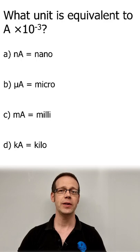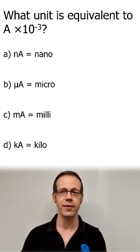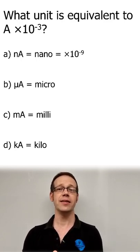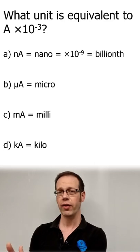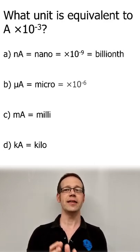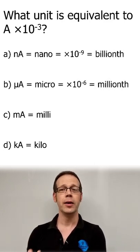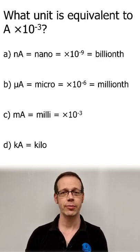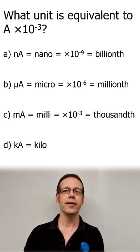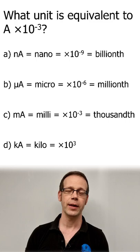We can simply swap out the letter for a power of 10. So nano becomes times 10 to the minus 9 or billionth, micro becomes times 10 to the minus 6 or millionth, milli becomes times 10 to the minus 3 or thousandth, and kilo is times 10 to the power of 3 or thousands.